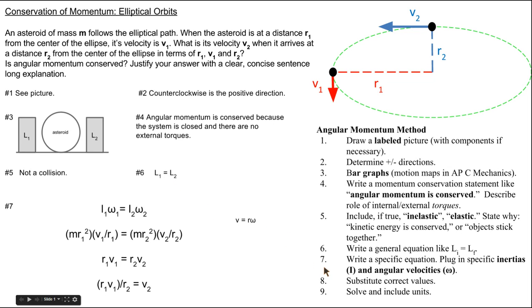Step 7, we're going to write the specific equation and plug in the specific inertias I and angular velocity. It's I1 omega 1 equals I2 omega 2.